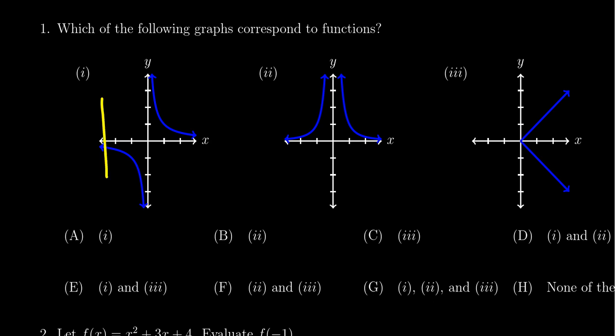So when we look at graph one, that's going to pass the vertical line test. Even though there is a vertical asymptote right here that's not a problem, there's no intersection of that vertical line, so one is going to be a function.